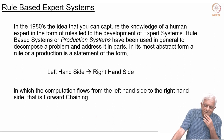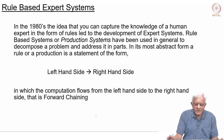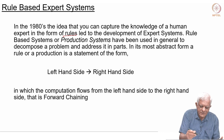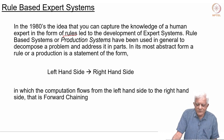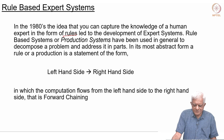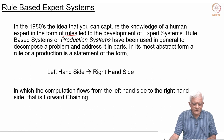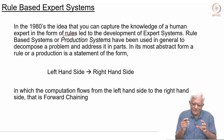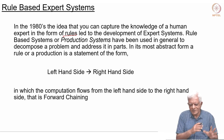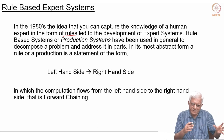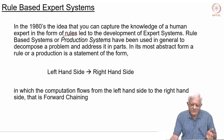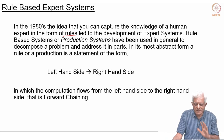In the 80s, the idea that you can capture the knowledge of human experts in the form of rules led to the development of expert systems — rule-based systems or production systems as they were called — used to decompose a problem and address it in parts. Every rule would address a part of a problem, and eventually, by applying different rules, the problem would get solved. The rules would come from experts.